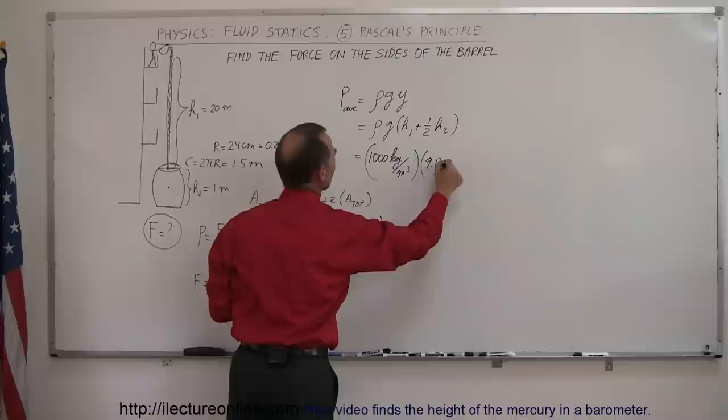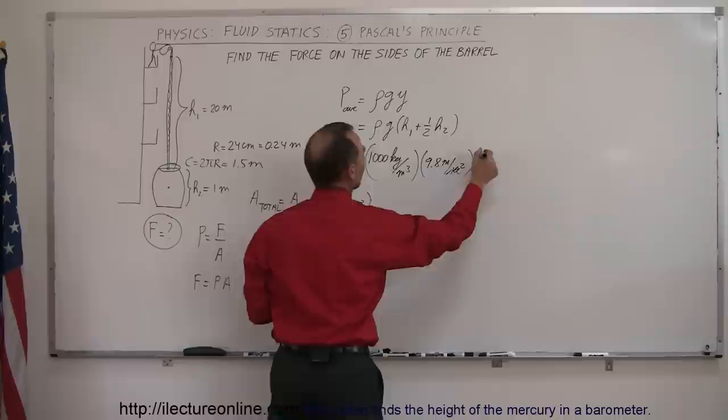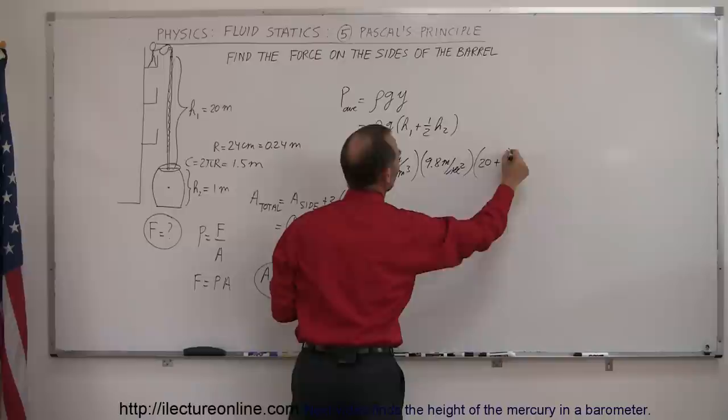The pressure here would be ρ, which is 1000 kg/m³, multiplied by 9.8 m/s² which is acceleration due to gravity, and multiplied by 20.5 meters because you only want to take half the height of the barrel.